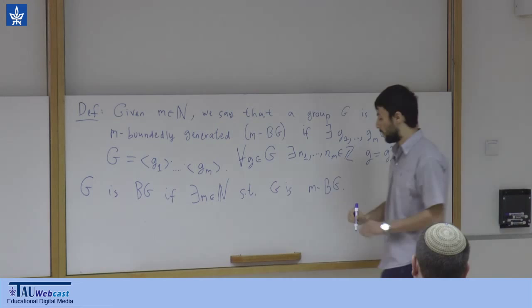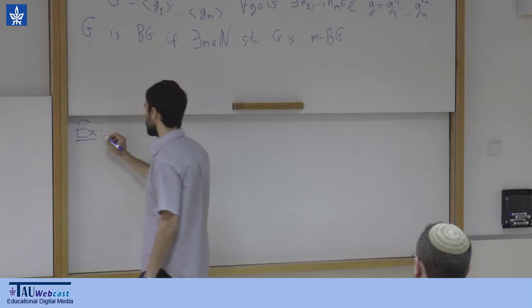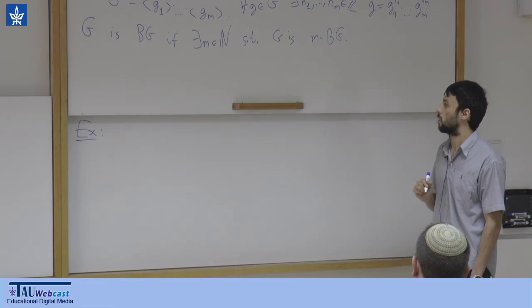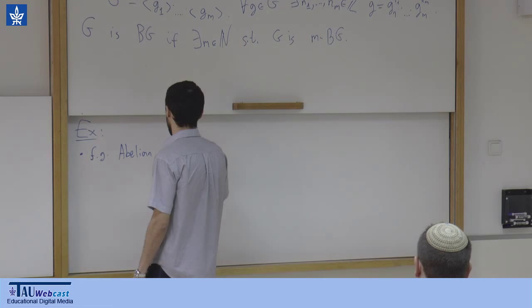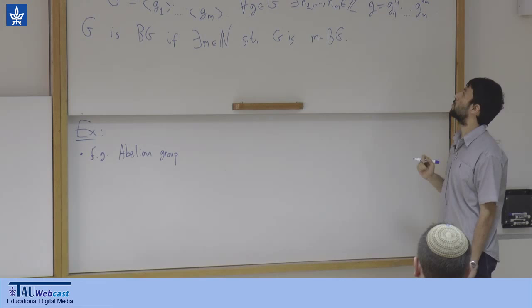Let me give some examples. Maybe the first pre-example is that of a finite group — clearly every finite group satisfies this, but we are interested in infinite groups. The first real example for me is a finitely generated abelian group. If it is finitely generated, I take the boundedly generating set to be the finite generating set. Since the elements commute, I can write every element in any order, so the group is clearly boundedly generated.